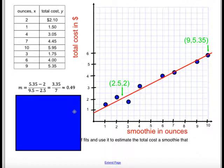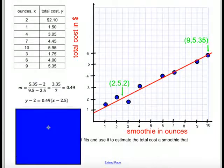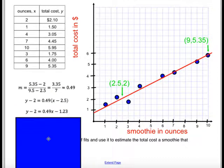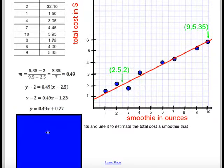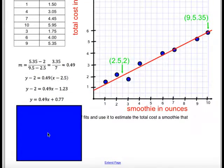Then I took the rate of 49 cents per ounce, and I picked one of those two points I used. I plugged it into my point-slope formula: y minus y sub 1 equals m times the quantity x minus x sub 1. Once I have done that, I distributed. And after I distributed, I added the 2 over, thus giving me the equation 0.49x plus 77 cents.